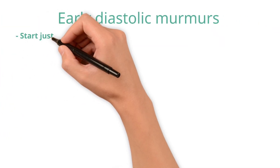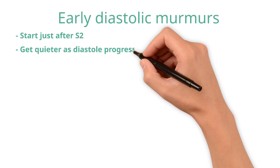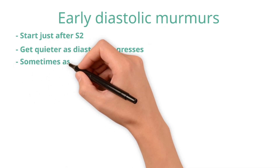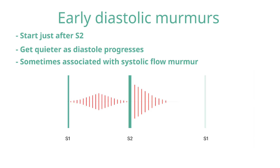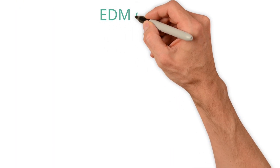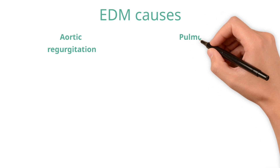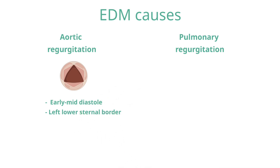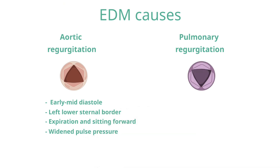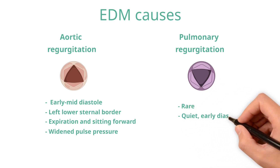Early diastolic murmurs occur just after S2 and decrease in intensity as diastole progresses. They are sometimes associated with a systolic flow murmur due to increased ventricular filling causing turbulence in systole. The main causes are aortic and pulmonary regurgitation. Aortic regurgitation causes an early to mid diastolic murmur loudest at the left lower sternal border, exacerbated by expiration and sitting forward, and often associated with a widened pulse pressure. Pulmonary regurgitation is rarer but causes a quiet early diastolic murmur, louder on inspiration.